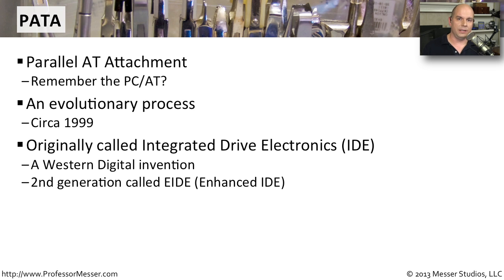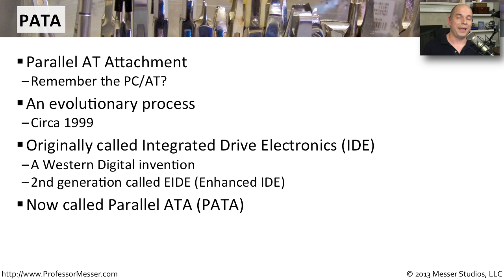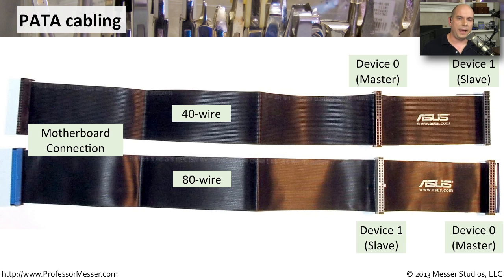Western Digital started this type of drive — it was called the Western Digital IDE. They even created an enhanced version, so you may see the EIDE drives referenced in older documentation. Because there's a newer type of drive called a SATA drive, or serial AT attachment, we use the term 'parallel' in front of these older ATA drives to designate the older parallel type communication — the PATA drive. In older systems with PATA drives, you'll see very large ribbon cables running from the motherboard or drive controller all the way to the drive itself — distinctive 40-wire or 80-wire cables.